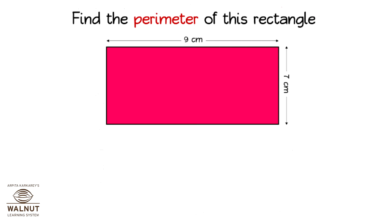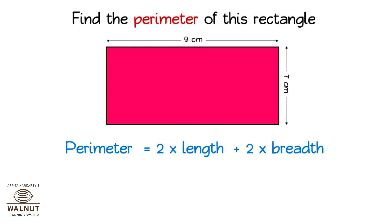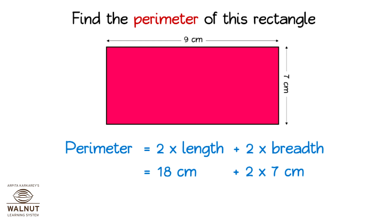Let us use the formula. Perimeter of a rectangle is 2 into length plus 2 into breadth. We know that the length is 9 cm and the breadth is 7 cm. Let us put those values in: 2 into 9 cm is 18, plus 2 into 7 cm is 14. Then we add and we get the perimeter: 32 cm.